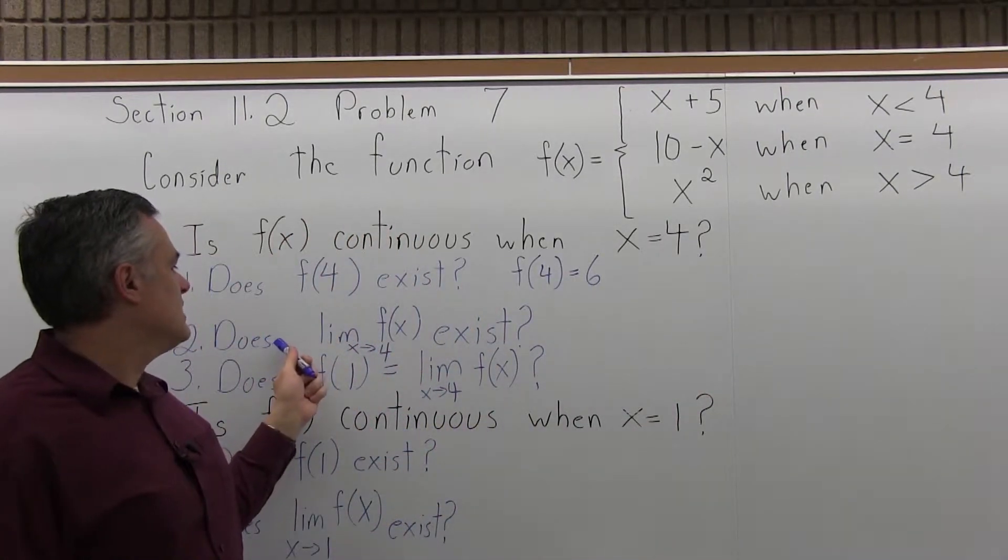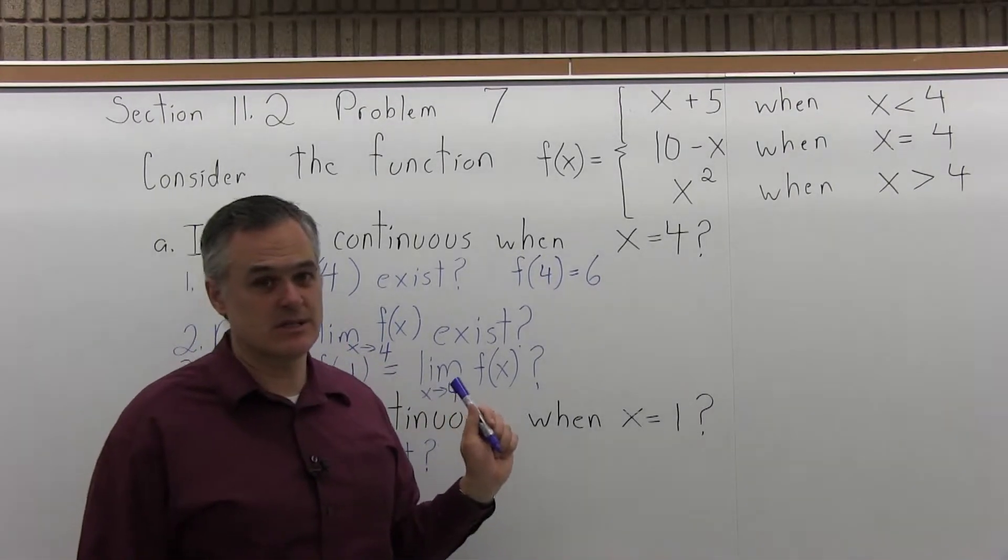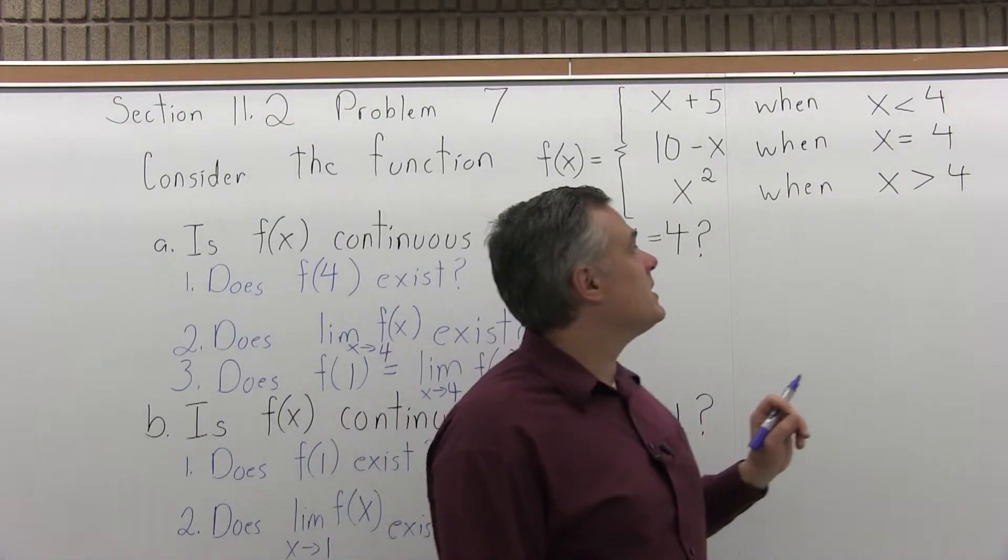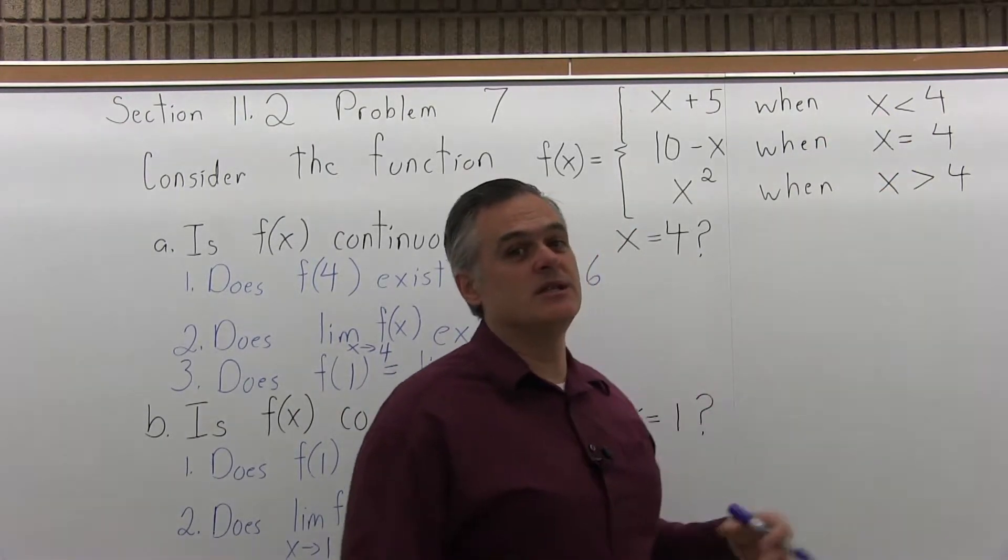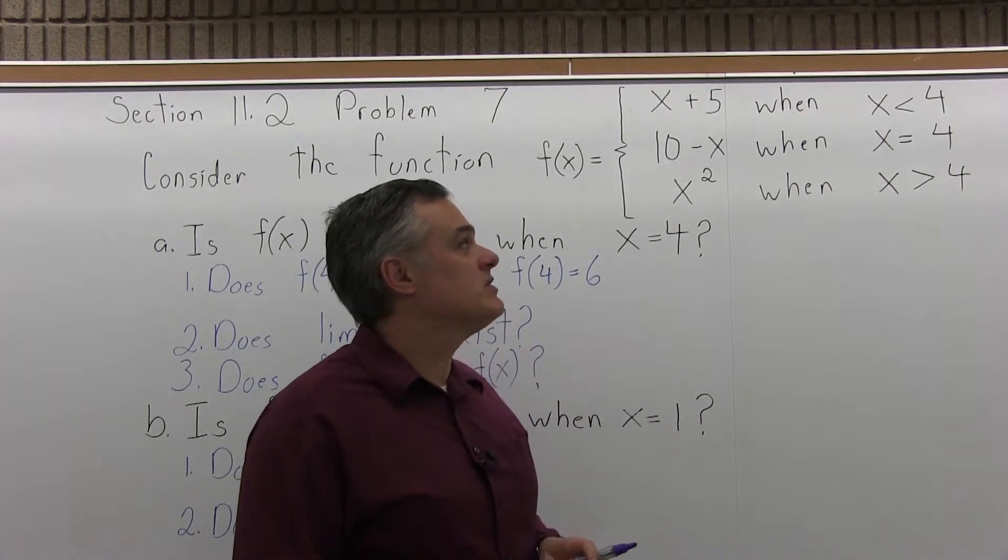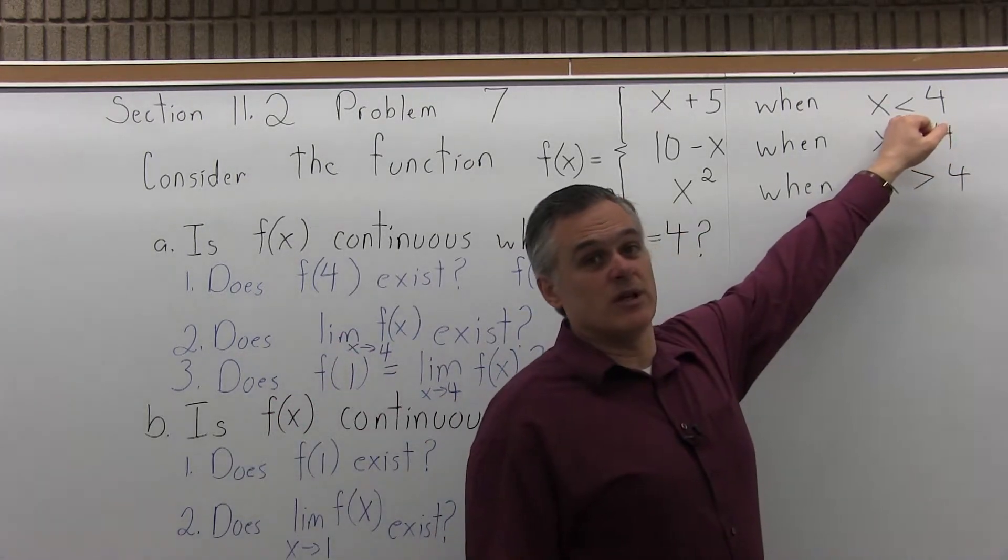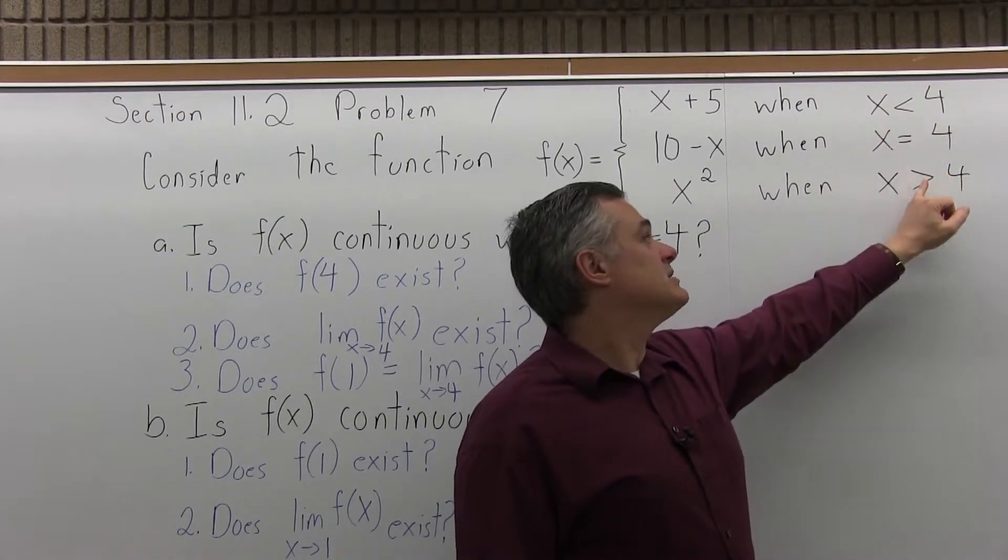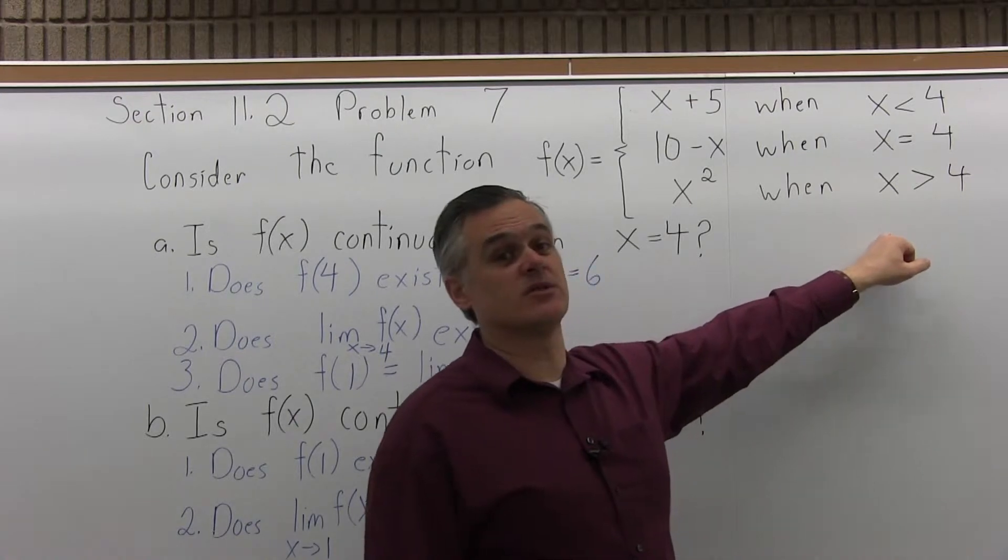So the second question is, does the limit of the function as the input approaches 4 exist? Now to check the limit, I need to use both the top and the bottom branch. As we approach 4, we have to use input values slightly smaller than 4, like 3.999, and also slightly bigger than 4, like 4.0001.